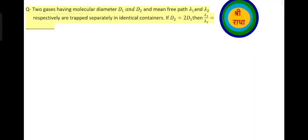Two gases having molecular diameter d1 and d2 and mean free path lambda1 and lambda2 respectively are trapped separately in identical containers. If d2 is equal to 2d1, find what is lambda1 by lambda2.